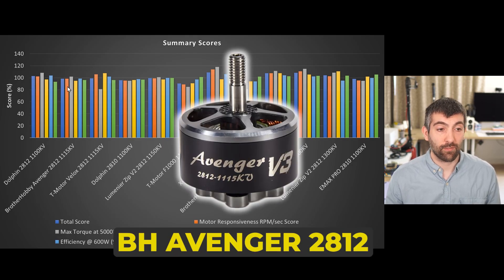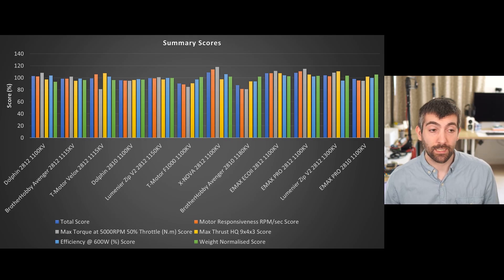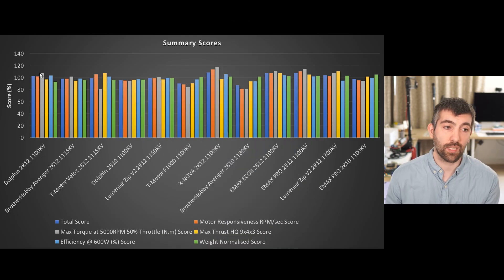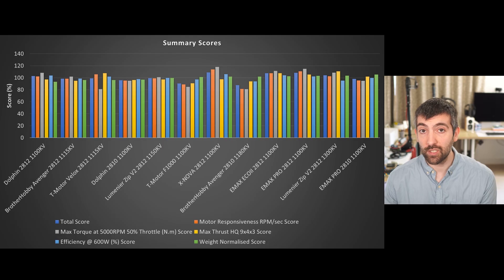The Brother Hobby Avenger 2812 1115, not a very impressive motor in terms of any of the performance that it delivered. I think it's an older design and that means that it struggles a bit more. Definitely the magnetic performance could be improved with a bit of a redesign of the rotor. And the Dolphin 2812 1100 kV, it performs well in some tests, not so well in others. It's very heavy and that hurts its weight normalized score and that's why it's at the bottom. If you're not concerned about weight, then the performance is okay. If price and availability are okay and you don't care about weight, it could still be an okay choice. But if you are concerned about weight, it's very heavy for the size and the performance that it gives.